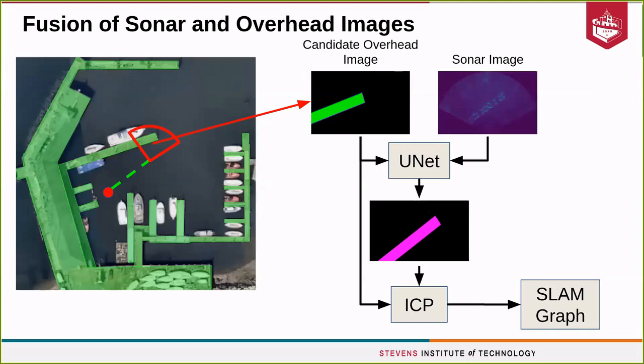First, we pull the candidate overhead image, shown here top left in green with black background — that is the sensor footprint at our current state estimate. We also have a sonar image from our current time step, and we push those together into UNET, which will output the magenta image shown under UNET. That is the candidate overhead image transformed into the sonar image frame. We can then use ICP between the candidate overhead image and the UNET output, and roll that transform into our SLAM graph.